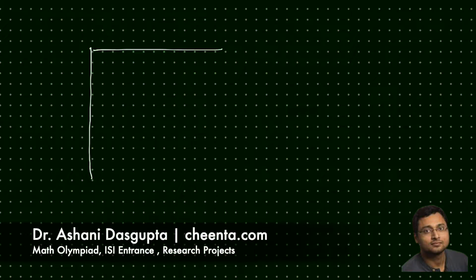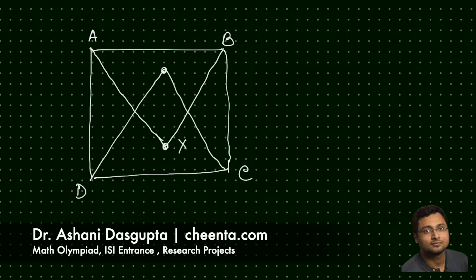Suppose we have a square ABCD. We draw equilateral triangles AXB and CYD like this.